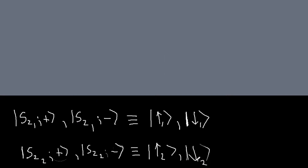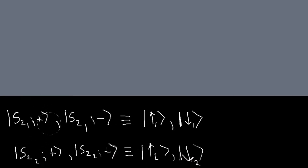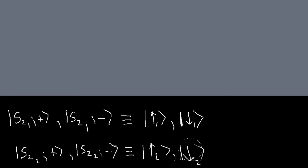One thing we could say about this system is that individually there should be a spin-z1 operator and a spin-z2 operator, and corresponding up-and-down kets. I'm going to switch notation here and use up-and-down arrows rather than plus and minus. So we have the first particle in spin up, the second particle can be spin down, the first particle can be spin down, and these are the states for the second particle spin up and spin down. You might say initially, well, maybe these are our four basis vectors for this system.